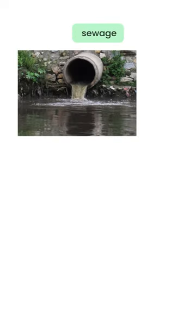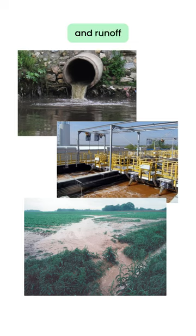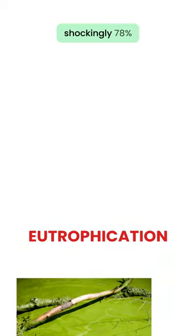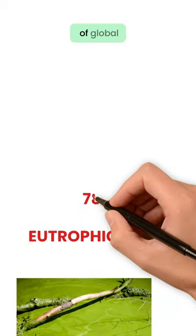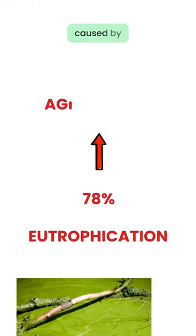Eutrophication is primarily caused by untreated sewage, industrial wastewater, and runoff from fertilizers entering the water. Shockingly, 78% of global eutrophication is reported to be caused by agriculture.